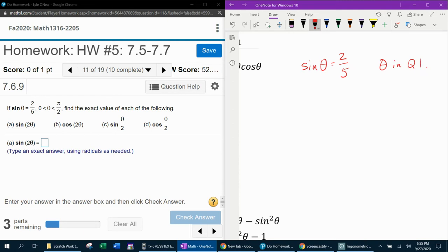Notice they say theta is between 0 and pi over 2, and what that means is that theta is in quadrant 1. It's a quadrant 1 angle. And so, we're going to need to find the exact value of each of these expressions.